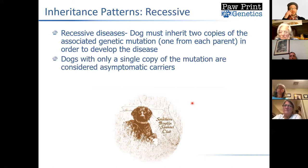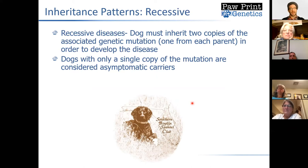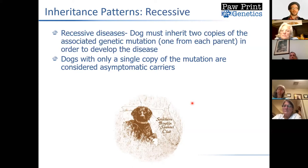Dogs that have only a single copy of one of these mutations are considered asymptomatic carriers. We would never have any indication in most true recessive diseases that they actually had it at all. This is where genetic testing can be really important, because if we happen to breed two asymptomatic carriers together, we can get some affected dogs.